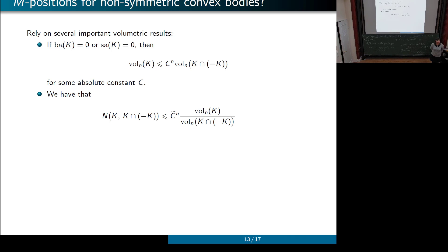Closing discussion: for bodies with certain symmetries (e.g., symmetric under permutation of coordinates), MM* is always sqrt(n). So it's between sqrt(n) and log(n) for such bodies, and the worst case might be the octahedron, in which case sqrt(n) might be the sharp bound. Any other questions or comments? If not, let's thank the speaker again.